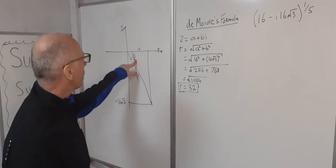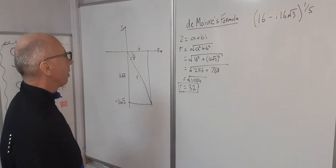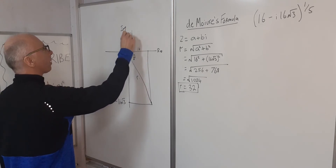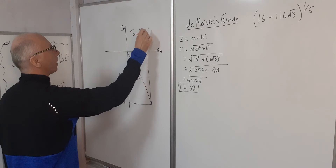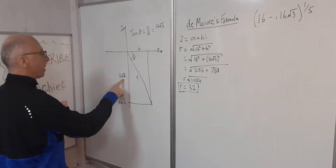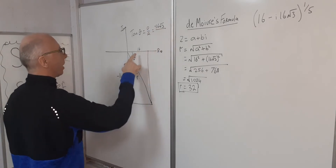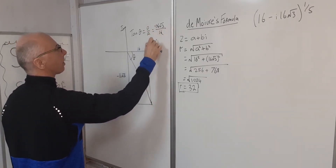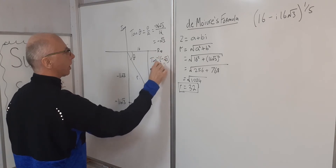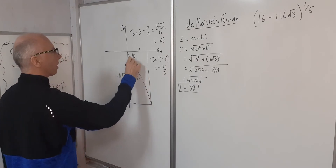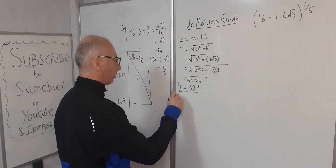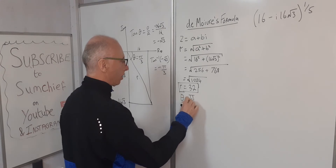Now we need to work out the argument — the principal argument. We use SOHCAHTOA. We've got 16√3 and 16, so tangent of theta equals opposite over adjacent: that's negative 16√3 over 16, leaving us minus √3. So the inverse tangent of negative √3 equals minus π/3. So theta equals minus π/3.